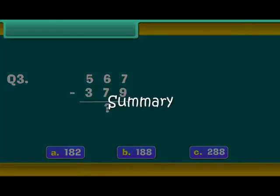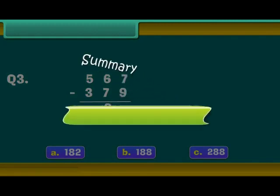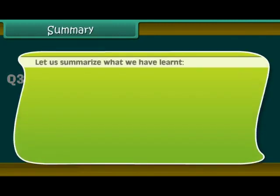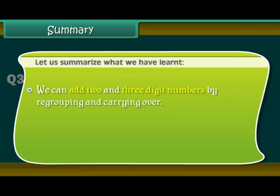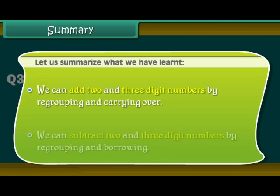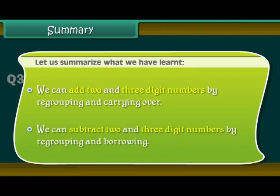Summary. Let us summarise what we have learnt. We can add 2 and 3 digit numbers by regrouping and carrying over. We can subtract 2 and 3 digit numbers by regrouping and borrowing.